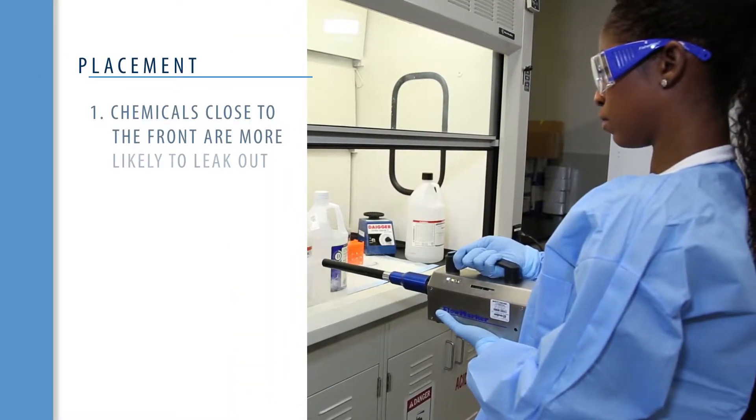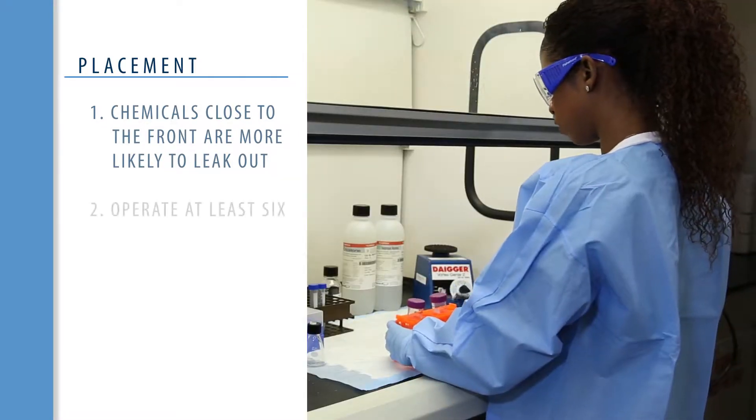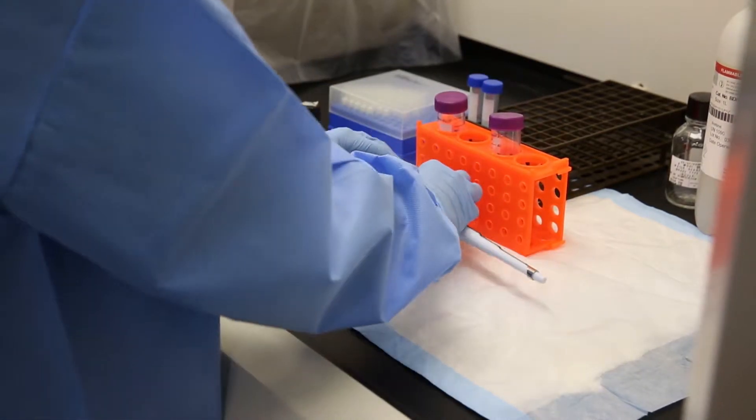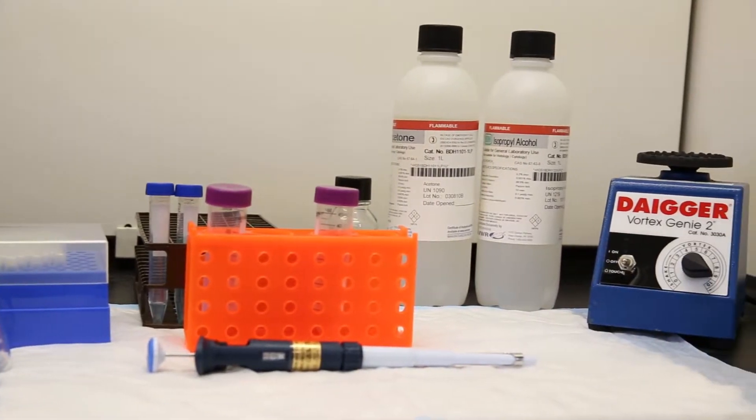Chemicals closer to the front of the hood are more likely to leak from the hood. Operate at least 6 inches from the front. The placement of objects close to the front opening may result in leakage and loss of containment.